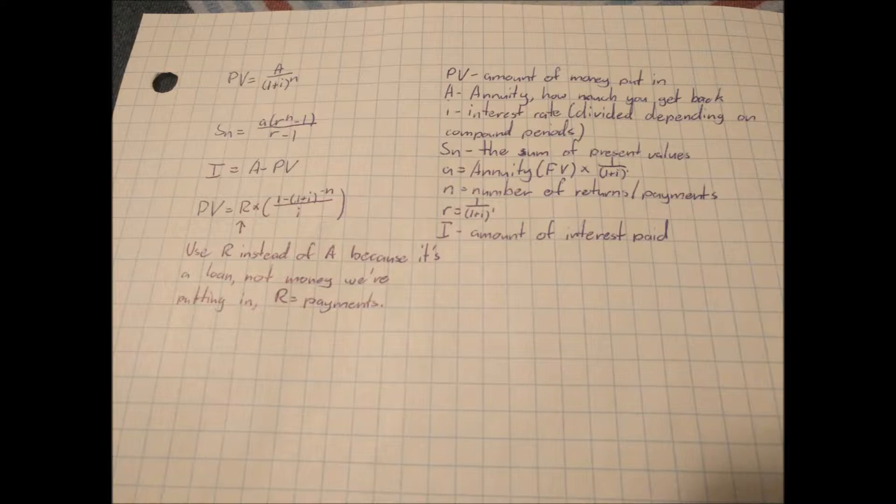The second equation is the sum of all the present values. Sn equals little a bracket R to the power of N minus 1 bracket divided by R minus 1. Sn is the sum of the present values. A is equal to the future value times 1 divided by bracket 1 plus I bracket to the power of 1. N equals the number of payments multiplied by the number of periods compounded. R equals 1 divided by bracket 1 plus I bracket to the power of 1, basically the first payment.